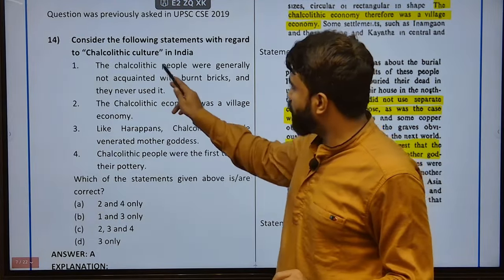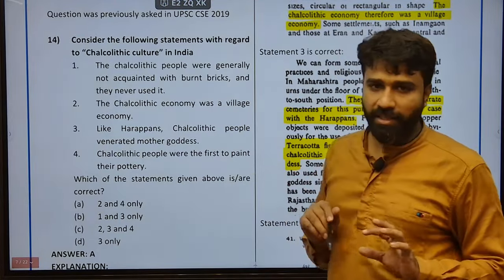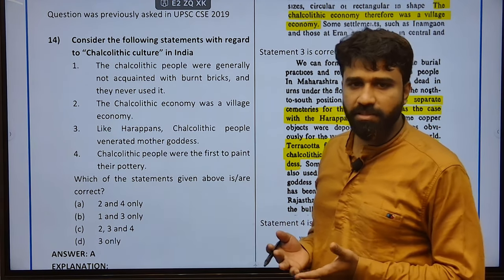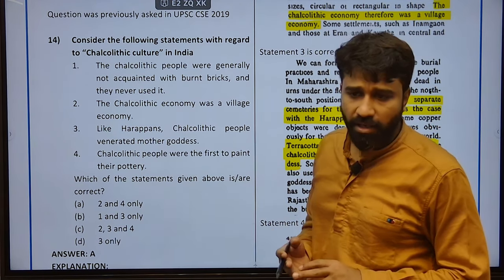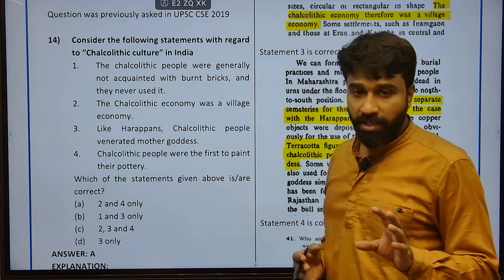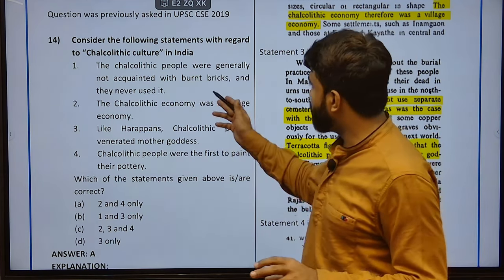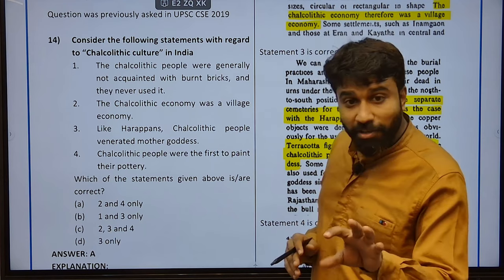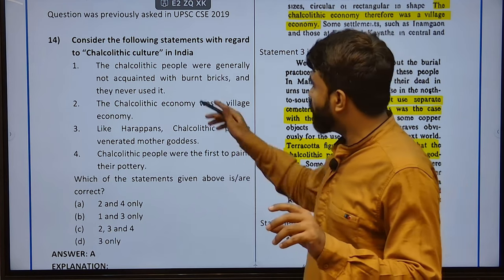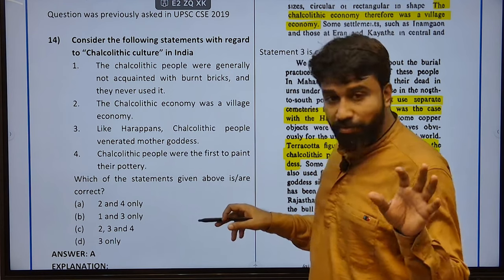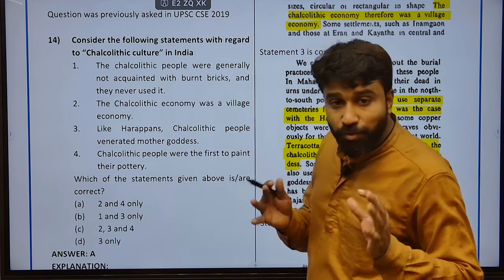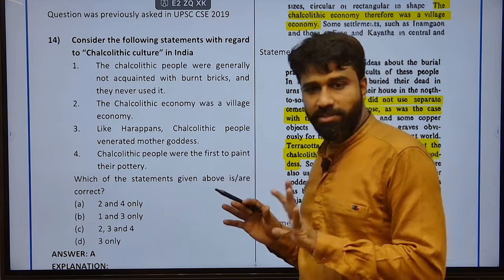Consider the following statements with regard to Chalcolithic culture in India. Chalcolithic means the bronze, which was an alloy of tin and copper. The Chalcolithic people were generally not acquainted with burnt bricks and they never used it — this is absolutely a wrong statement.